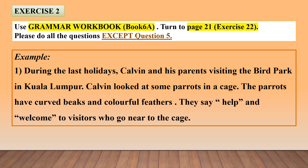During the last holidays, Kelvin and his parents were visiting the bird park in Kuala Lumpur. Kelvin looked at some parrots in a cage. The parrots have curved beaks and colorful feathers. They say 'help' and 'welcome' to visitors who go near to the cage. After reading the whole paragraph, if you have any words that you do not understand, you can check the meaning of words on your own.